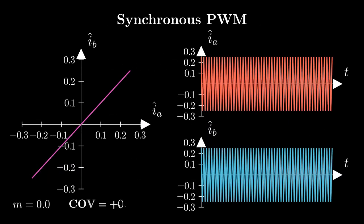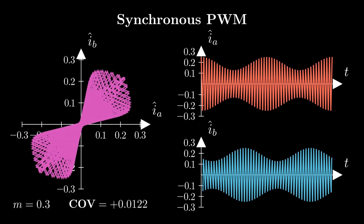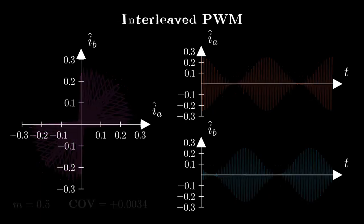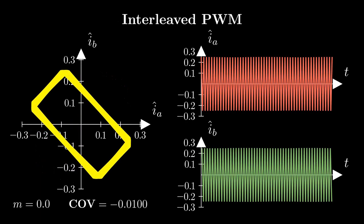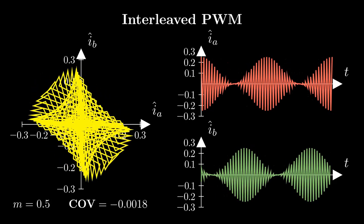By looking at the covariance in the case of synchronous PWM, it is clear that it represents always positive values over the whole modulation index range. On the other hand, interleaved PWM presents an always negative covariance, ensuring in any working condition ripple cancellation effect.